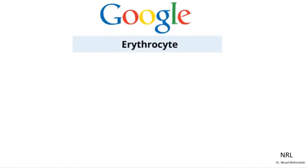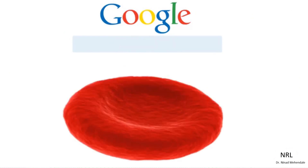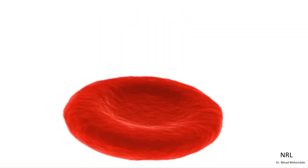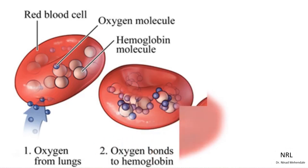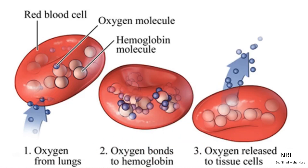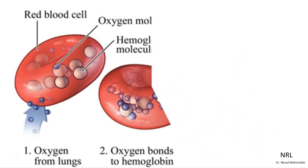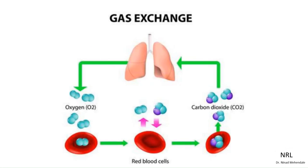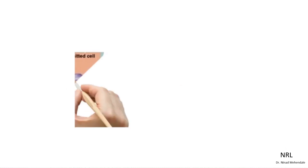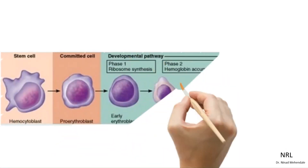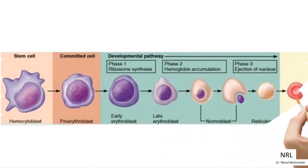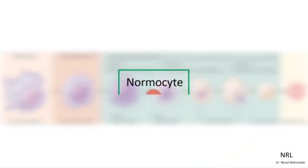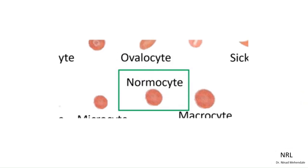Erythrocyte, more popularly known as red blood cell, is a biconcave disc-shaped cell. Erythrocytes contain hemoglobin and transport oxygen and carbon dioxide to and from the different parts of the body. Typically, red blood cells are biconcave-shaped because they do not contain a nucleus. In case of disease, their biconcave disc shape is affected.